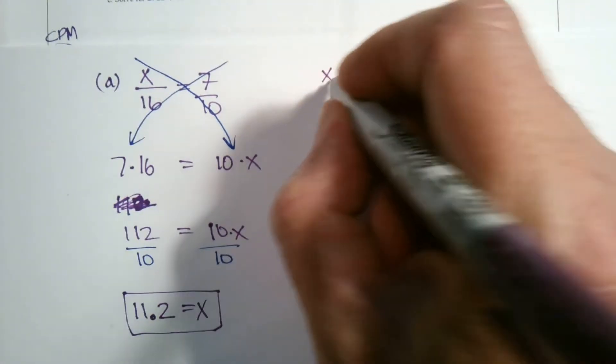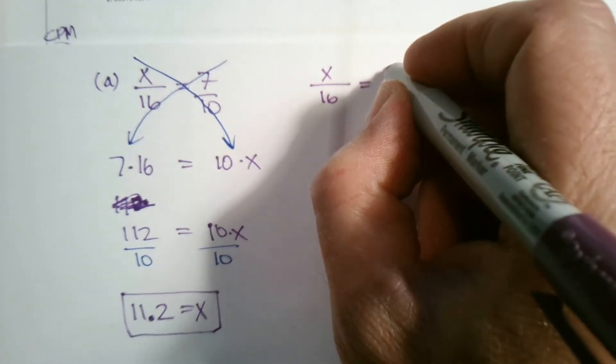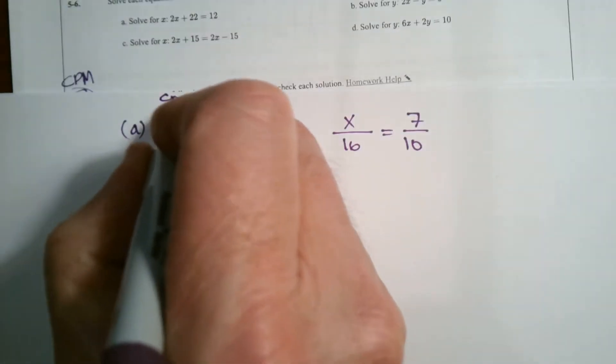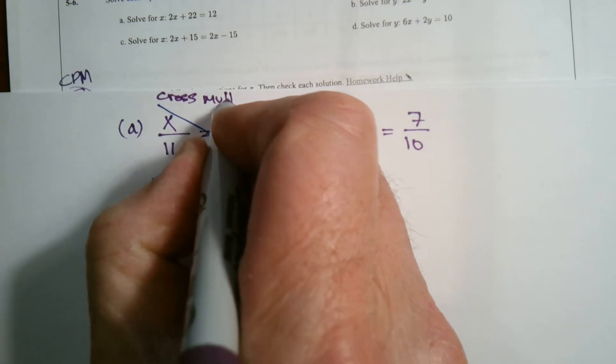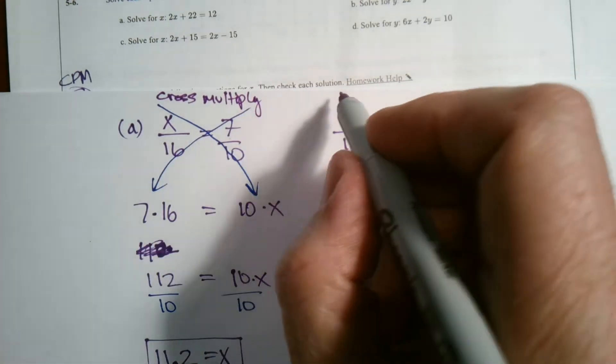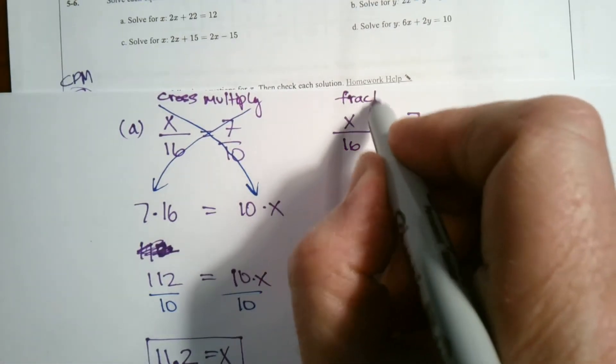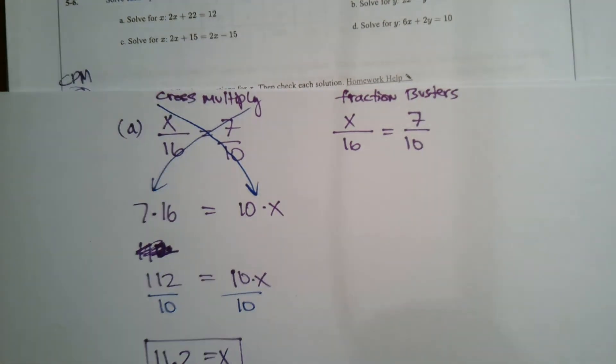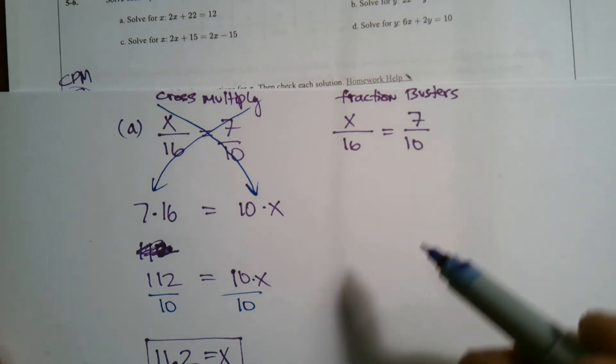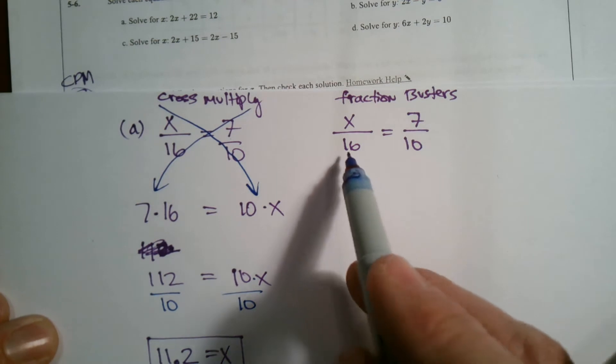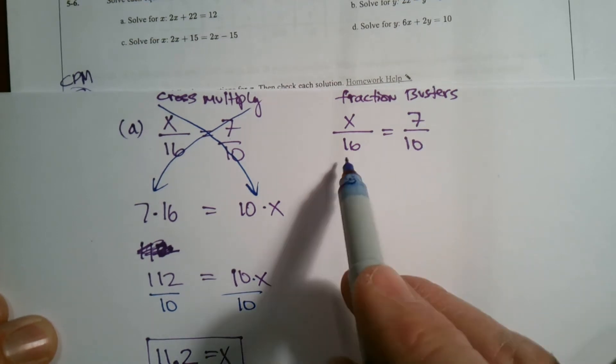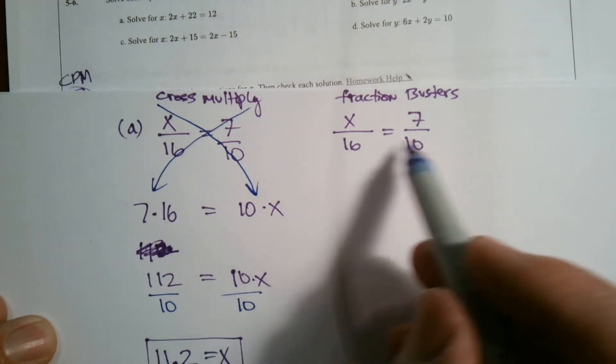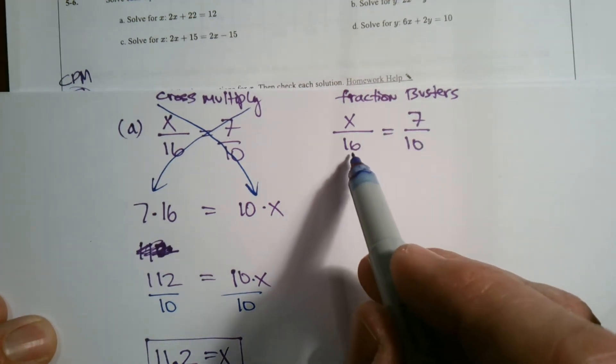So what I want to also point out, I'm going to do the exact same question and use—so this was using cross multiplication, cross multiply. And then I want to use this one, I want to use what I call or what is known as fraction busters. I didn't make that up. That is definitely something that has been known. Fraction busters. What you do with fraction busters is you find a number that each of those go into, like what is the least common multiple, or we could say the common denominator of 16 and 10.